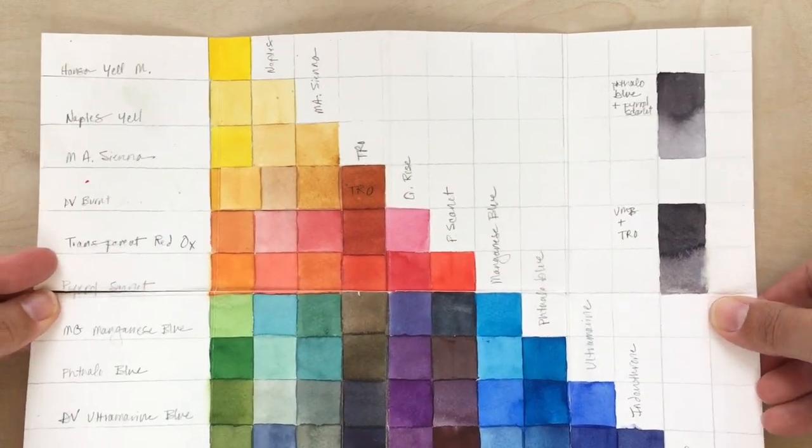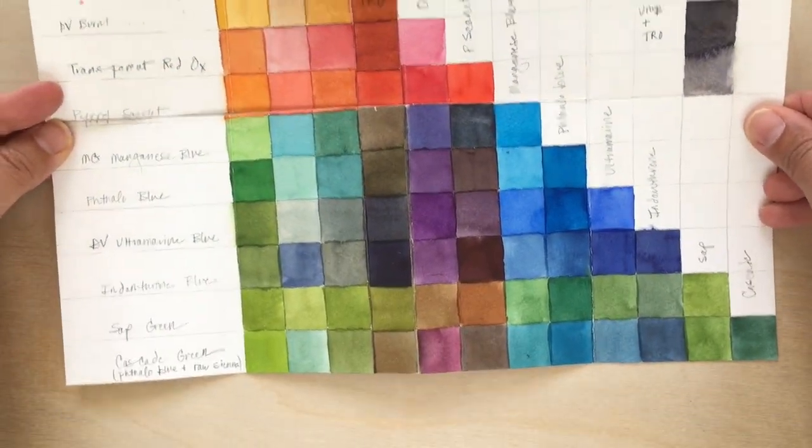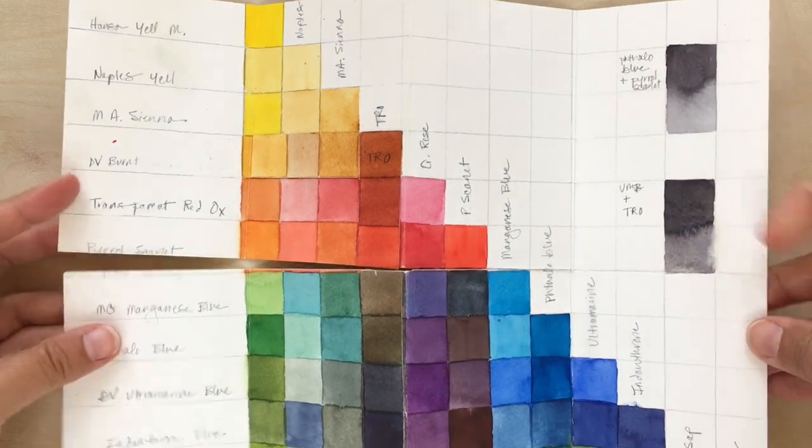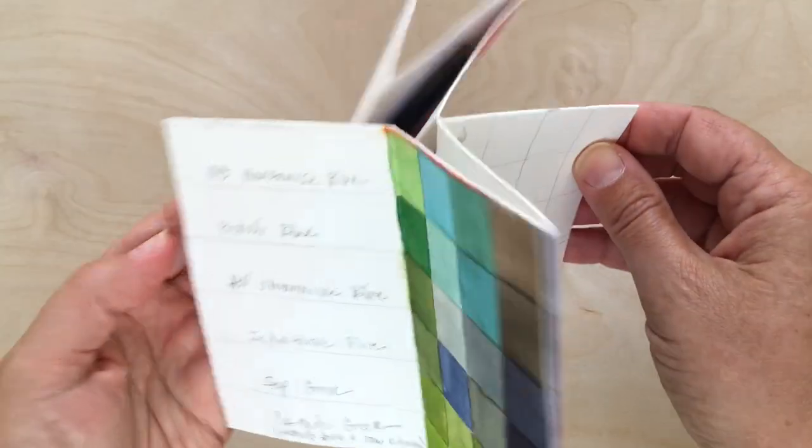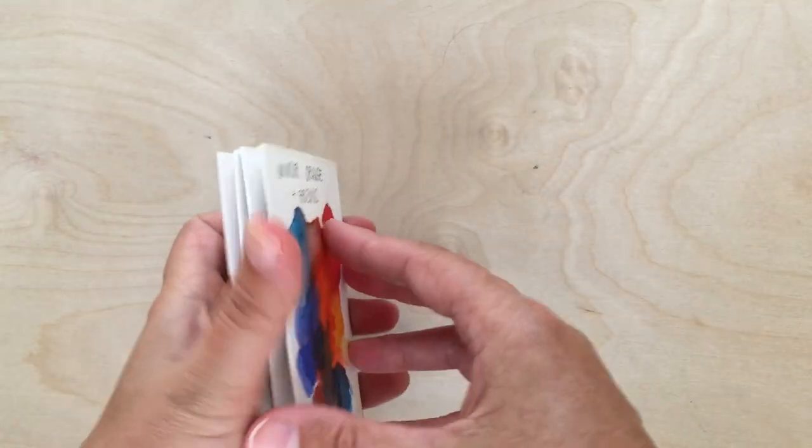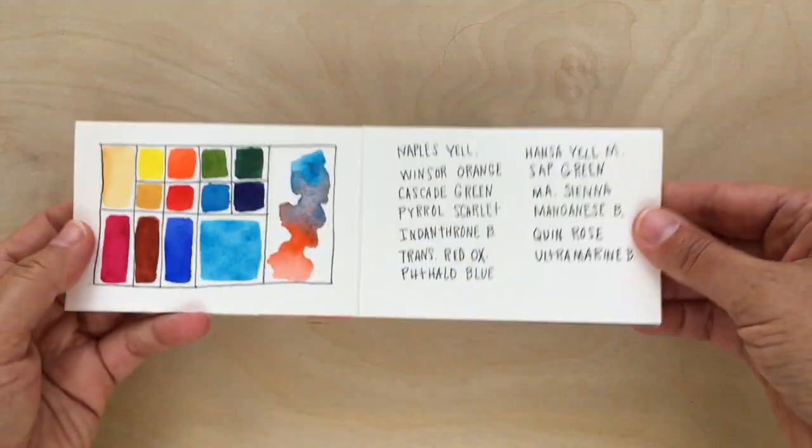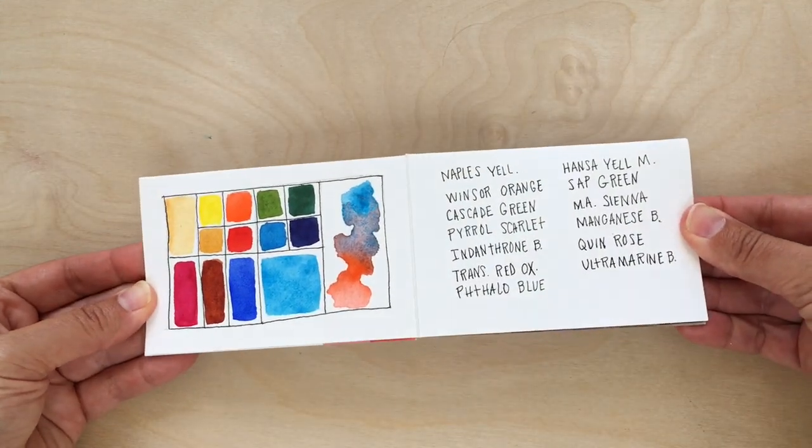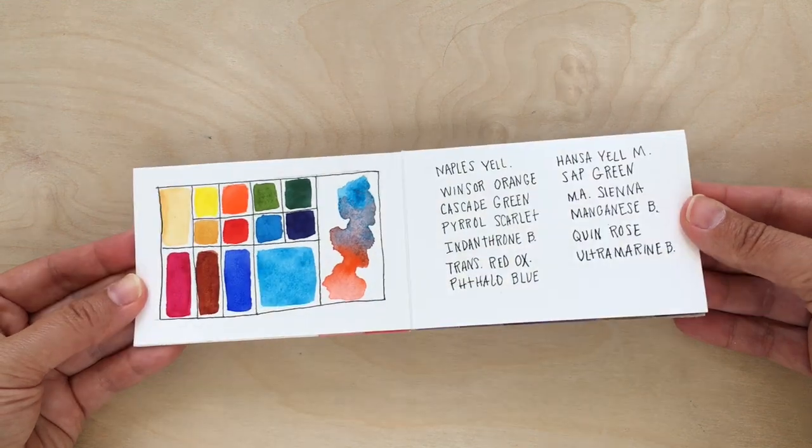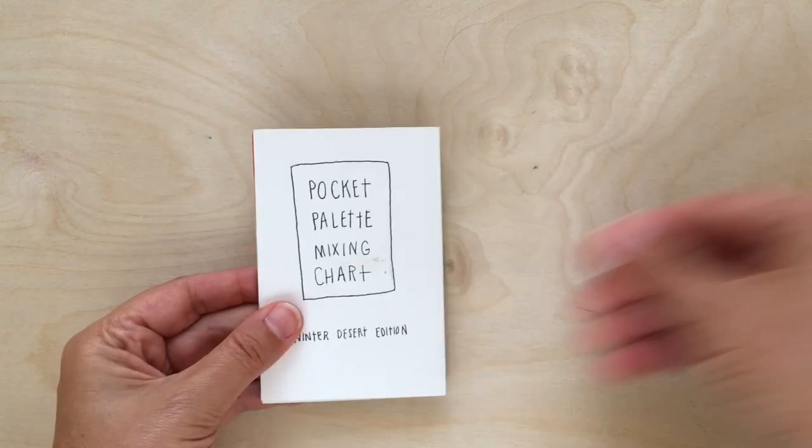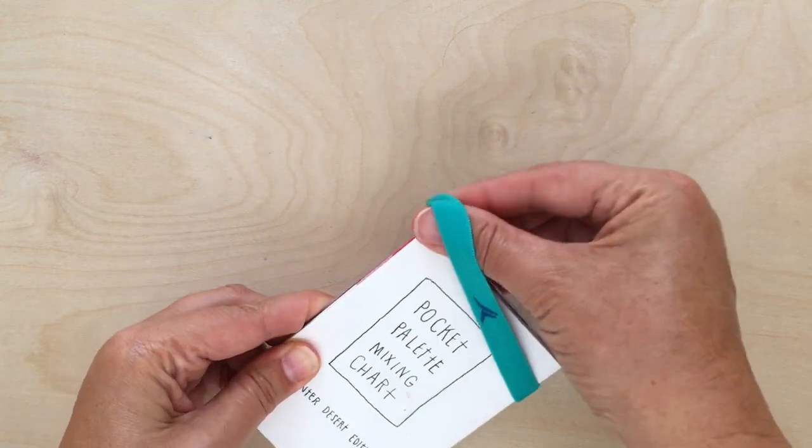And on one side of the paper I made a mixing chart. So here's all the colors swatched out. And then here are the colors that I ended up putting in the palette. So I put down where they were in the palette and then a list of all of the colors. And this little thing has really come in handy.